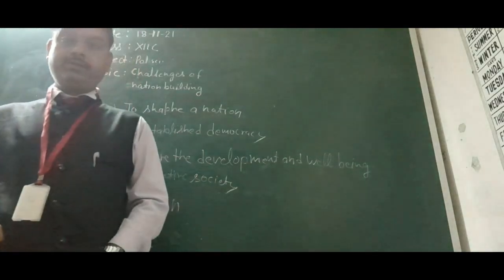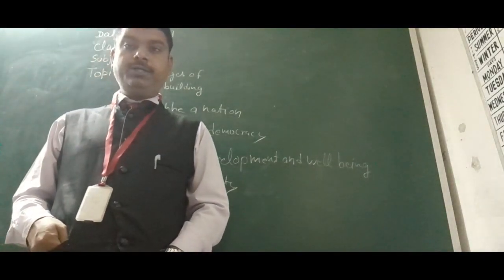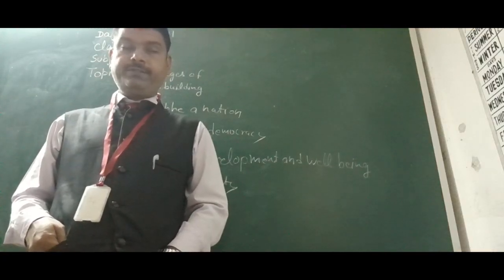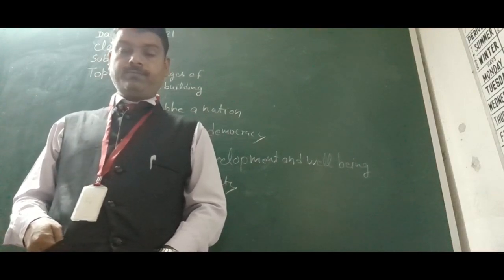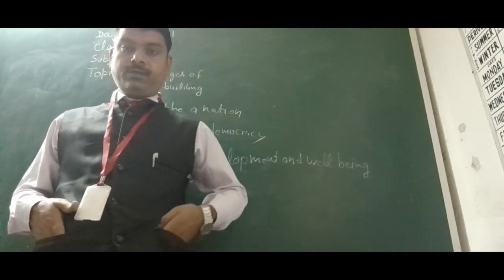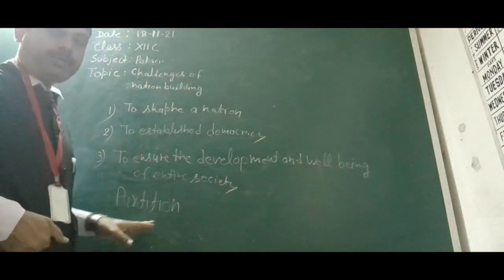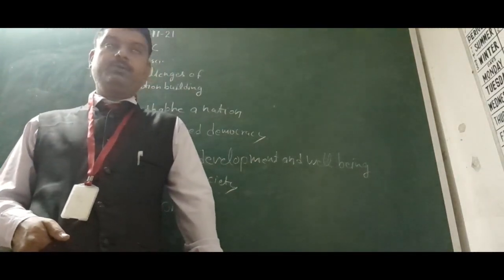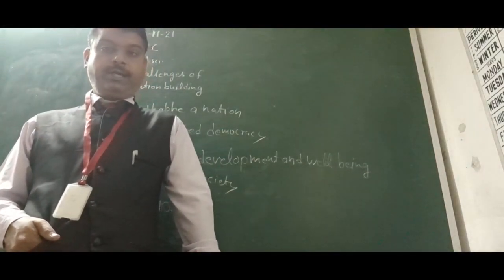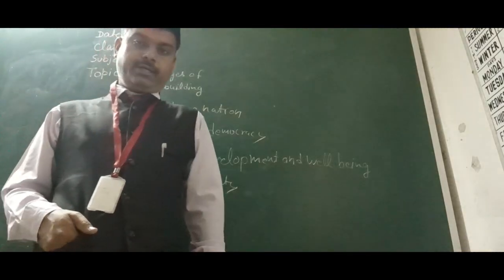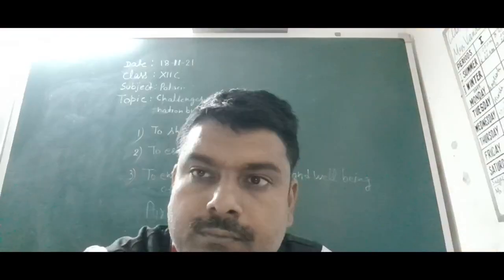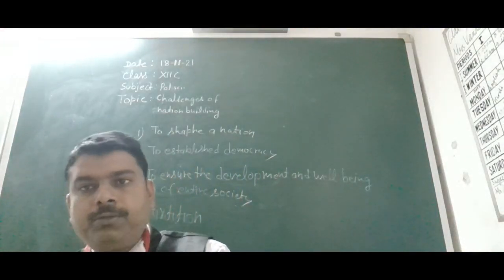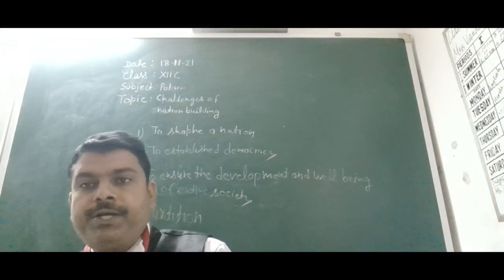The partition was based on the religious majority. The Muslim majority area went to Pakistan, and the rest remained with India. According to the two-nation theory, British India was divided into India and Pakistan.